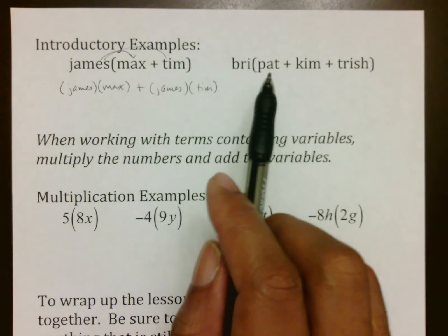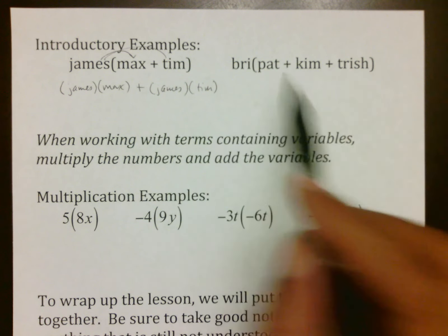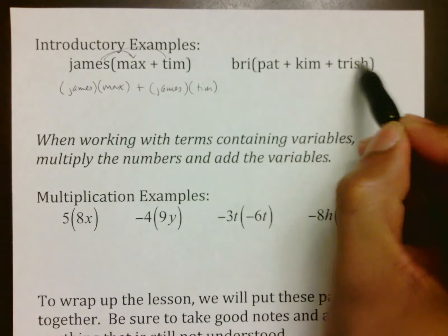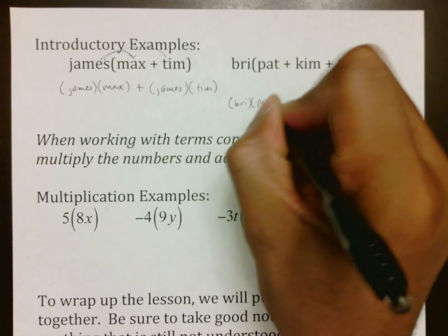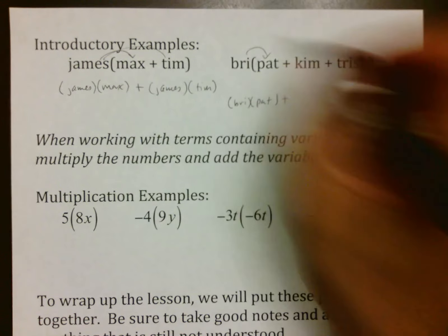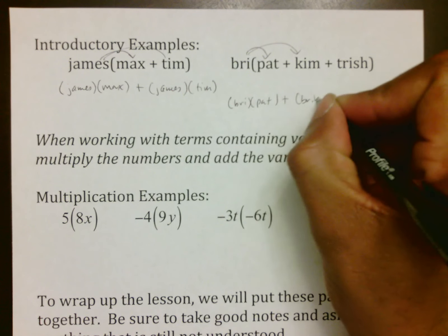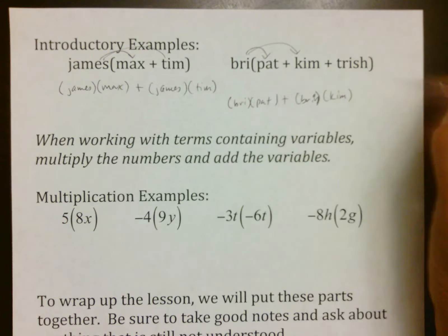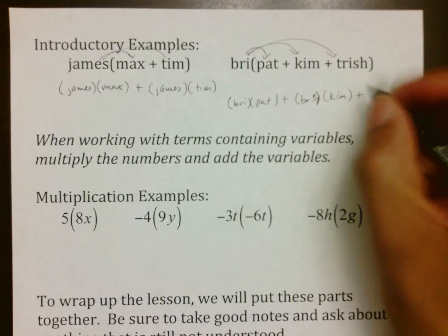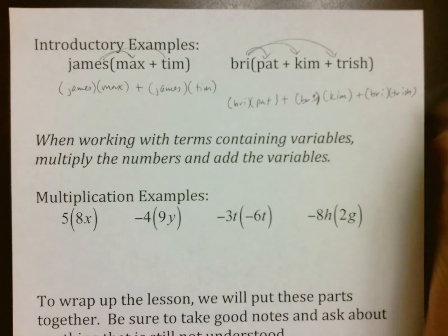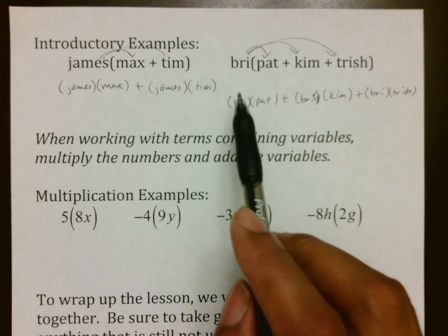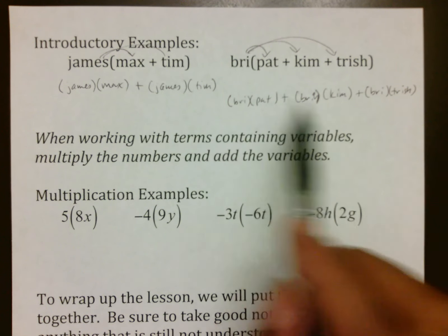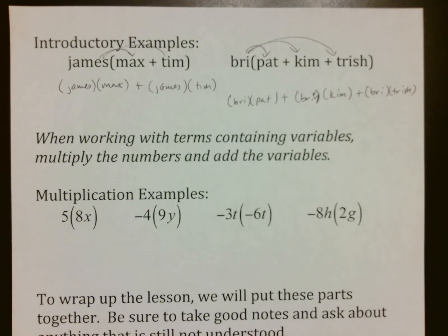Here, we have Bree meeting Pat, Kim, and Trish. Two or more things can be inside this parenthesis, but because of the parenthesis, it means that these three people know each other already. Bree is going to meet Pat, and Bree is going to meet Kim, and Bree is going to meet Trish. The general idea of the distributive property has no algebraic idea behind it. Bree meets Pat, and Bree meets Kim, and Bree meets Trish. As long as you understand that you have the base idea of what you need to be able to do.